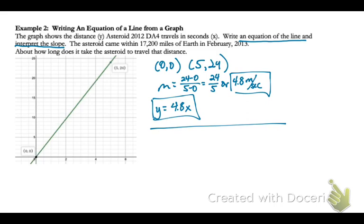So my y-intercept is zero, so I know that my b value will be zero. So my equation can just be y equals my slope 4.8 times x. Now let's talk about that situation where the asteroid came within 17,000 miles of earth.